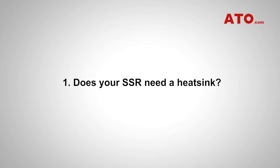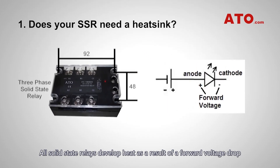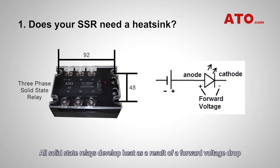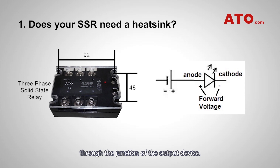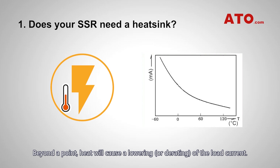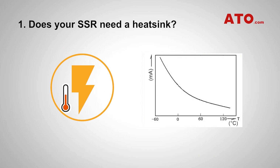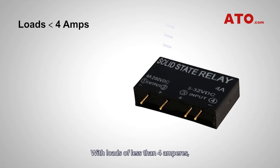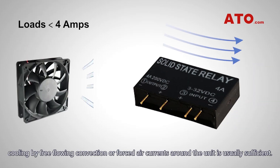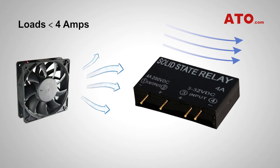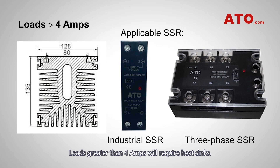Does every SSR need a heat sink? All solid-state relays develop heat as a result of a forward voltage drop through the junction of the output device. Beyond a point, heat will cause a lowering or derating of the load current. With loads of less than 4A, cooling by free-flowing convection or forced air currents around the unit is usually sufficient. Loads greater than 4A will require heat sinks.